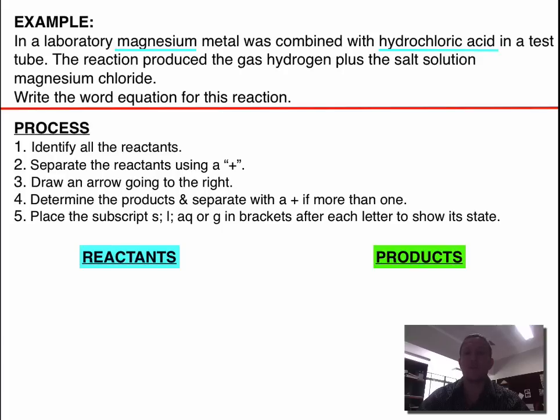Then we have to find what our products are. Our products are what was formed. As you can see, it says the reaction produced. So, this is going to tell us what our products are. We've got hydrogen gas, and we've got the salt, magnesium chloride.